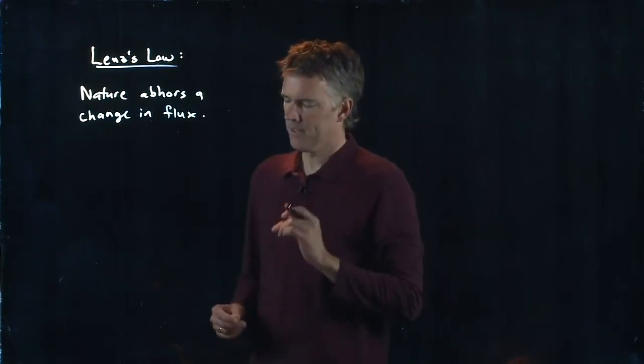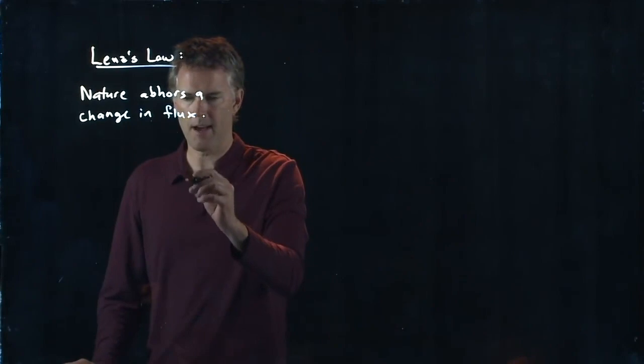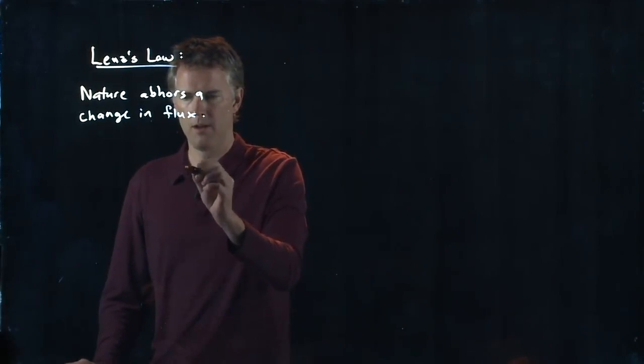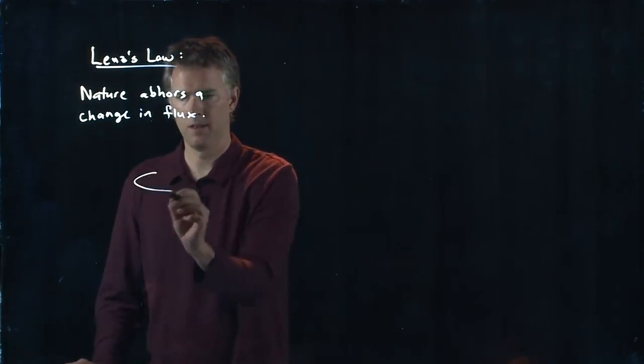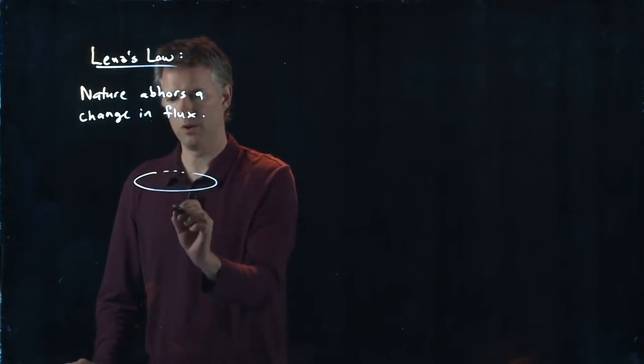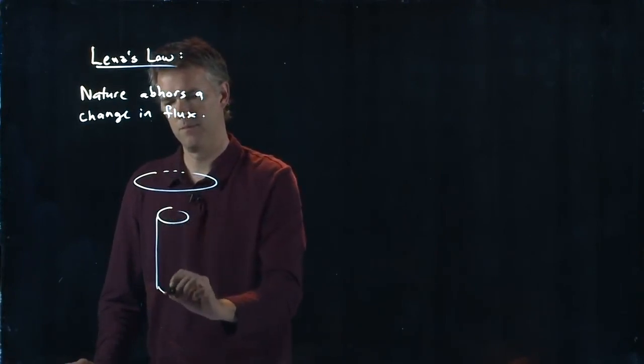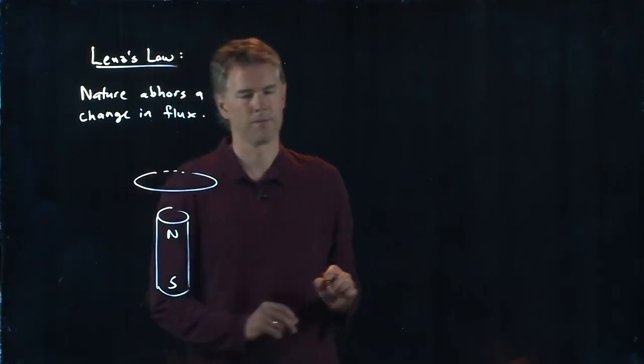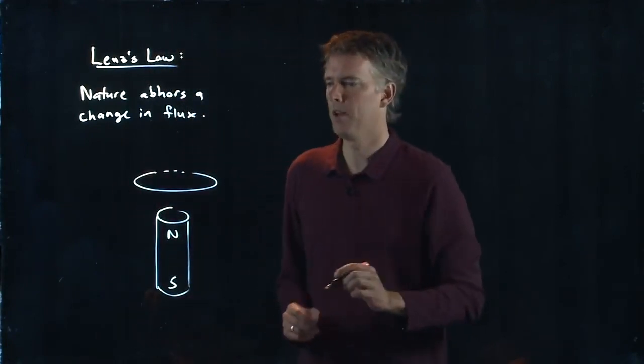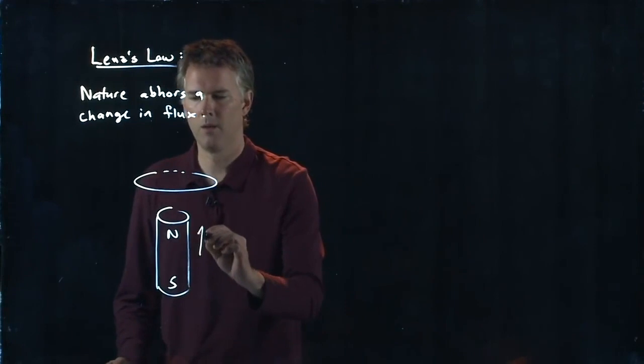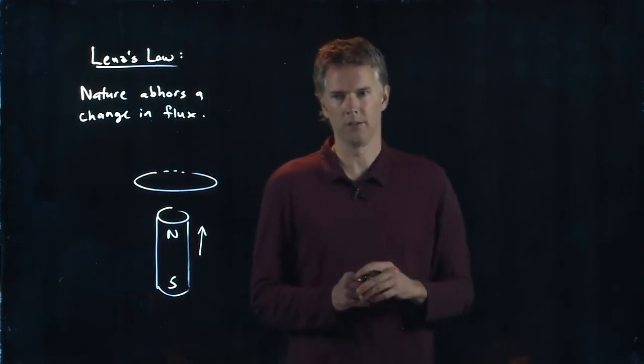So let's say I do the following. Let's say I have a magnet that is approaching a current loop, like so, north and south. And we want to figure out what direction the current is going to go.